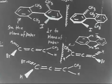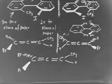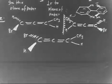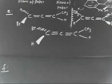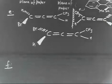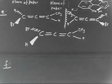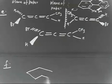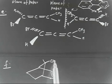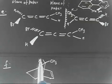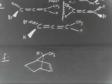Let us discuss the next part. For molecule F, you have a double bond in the middle, with CH3 and hydrogen on each carbon of the double bond — essentially a symmetrically substituted alkene. Can you draw the mirror image of this and tell whether this compound will exist in an asymmetric form or not?